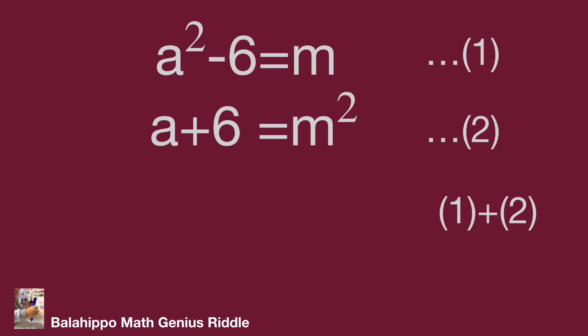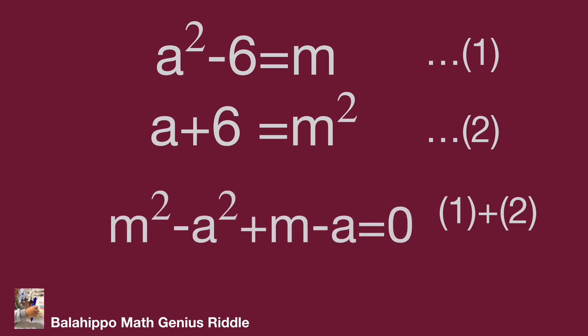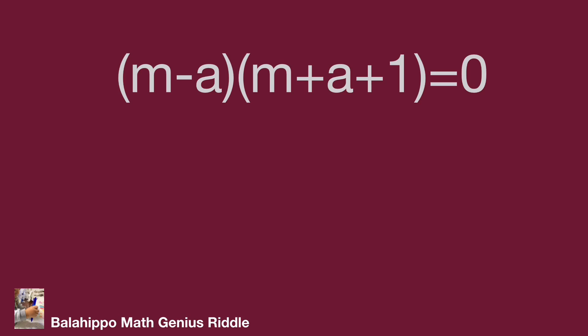Adding equation 1 and equation 2 eliminates the 6 terms, giving a squared plus a equals m plus m squared. Moving all items to one side gives m squared minus a squared plus m minus a equals 0. Factorizing: quantity m minus a times quantity m plus a, plus quantity m minus a equals 0, which becomes quantity m minus a times quantity m plus a plus 1 equals 0.